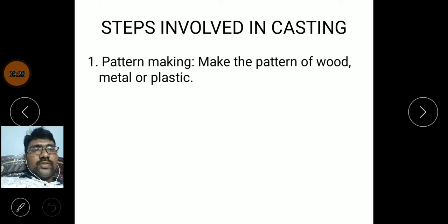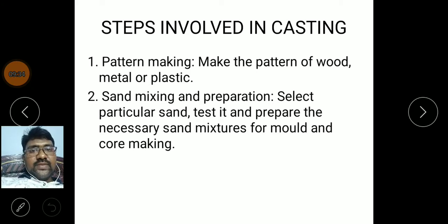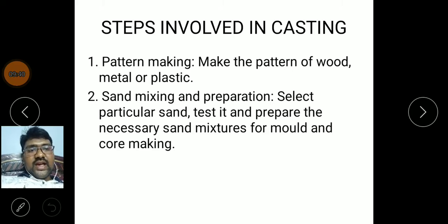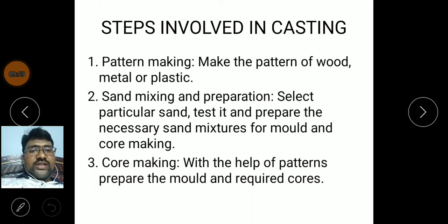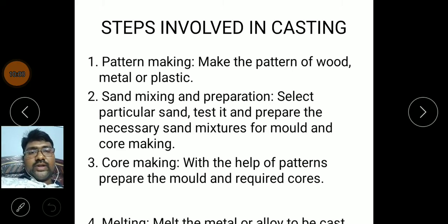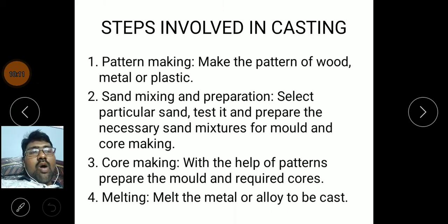Step one: pattern making — make the pattern of wood, metal, or plastic. Step two: sand mixing and preparation — select particular sand, test it, and prepare the necessary mix for mold and core. Before making the mold, the sand must withstand the forces developed due to the molten metal. Step three: core making — with the help of the pattern prepare the mold and required cores for making hollow objects. Step four: melting — melt the metal or alloy to be cast.